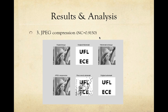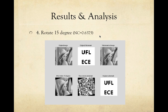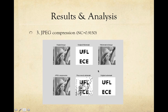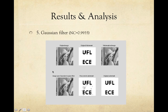Next, applying JPEG compression to the watermarked image, we can roughly gather information from the recovered logo, but there are many corrupted black dots and the letter E is hardly recognizable. The NC value shows relatively limited robustness to JPEG compression. For 15-degree rotation, we cannot read the recovered watermark at all, and the low NC value indicates the algorithm is not robust against geometric distortions such as rotation. Finally, applying a Gaussian filter gives the best result of all — the recovered image can be clearly recognized.